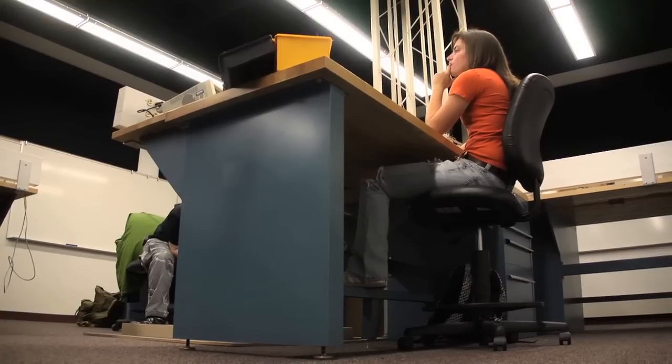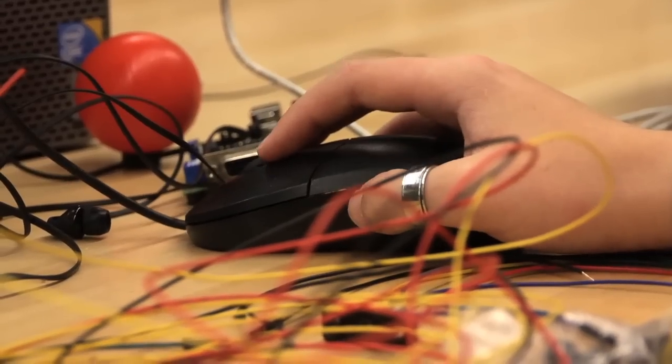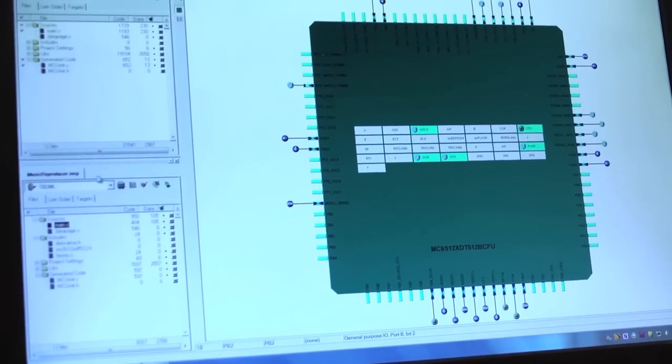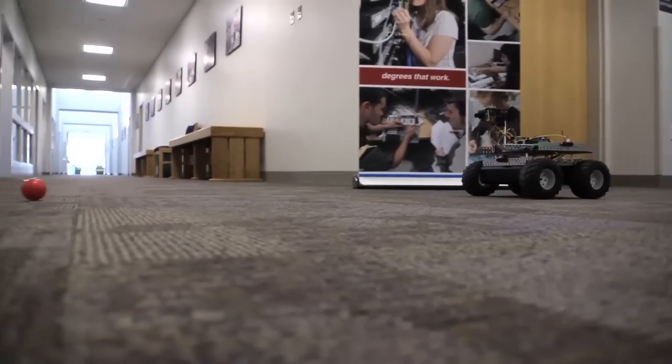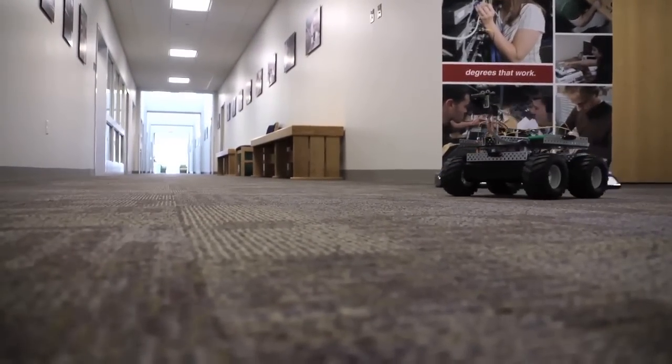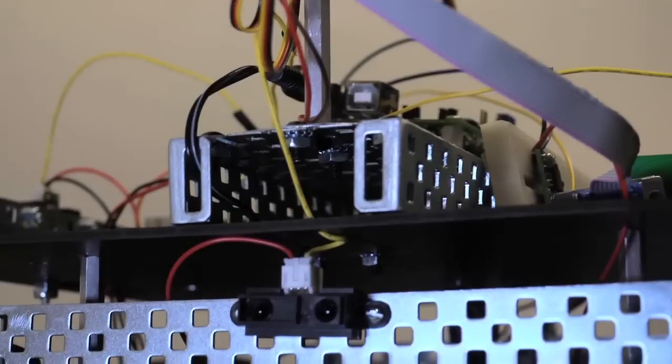I had to make a bunch of contingency plans. What to do if this happens, what to do if that happens. Running into objects was also a problem, which I fixed and added sensors to it so that it wouldn't do that anymore.